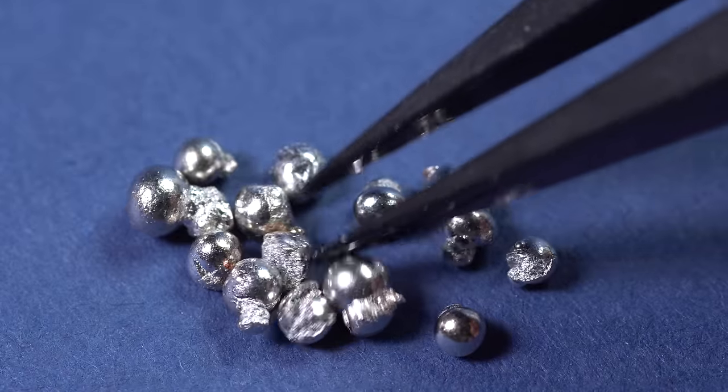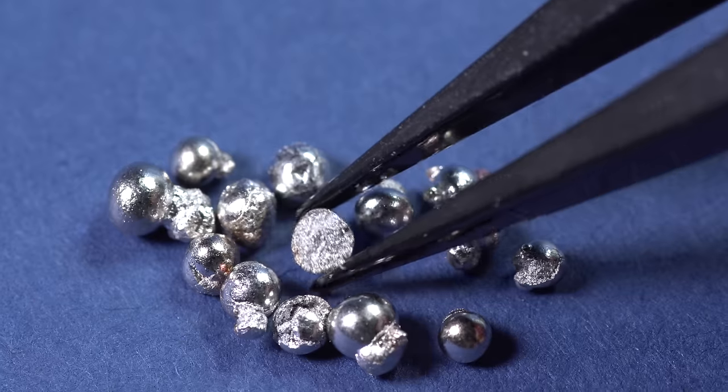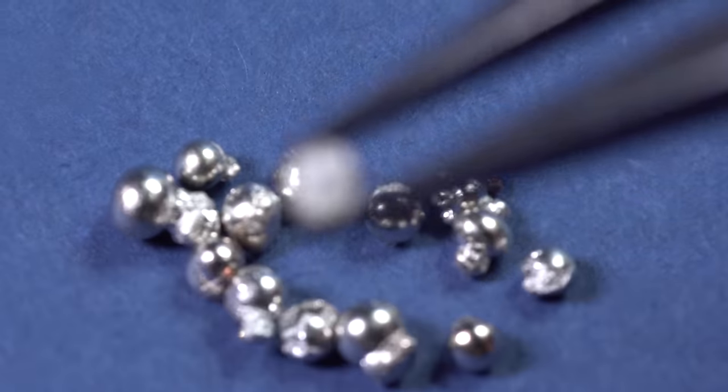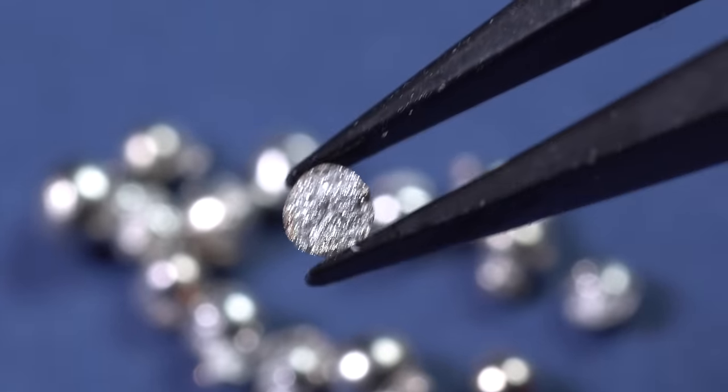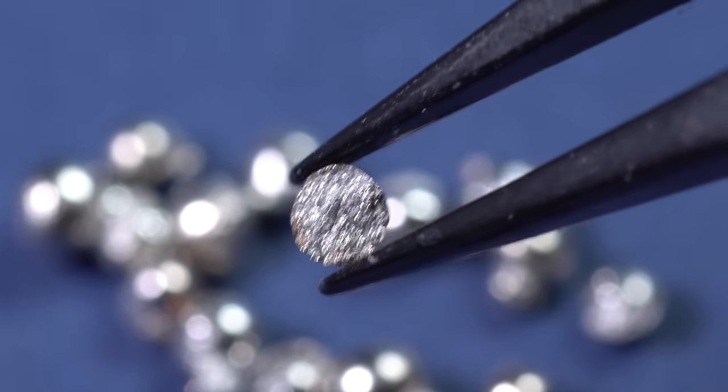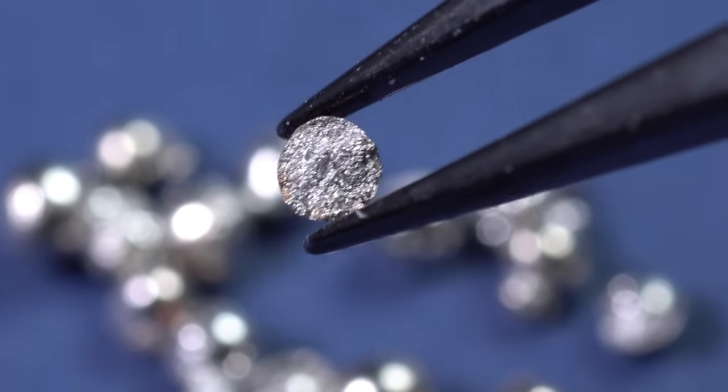The pure extracted ruthenium is a shiny and heavy metal with a quite high melting point – 2334 degrees Celsius. As some of the split ruthenium balls indicate, this metal is quite fragile and almost cannot be forged.